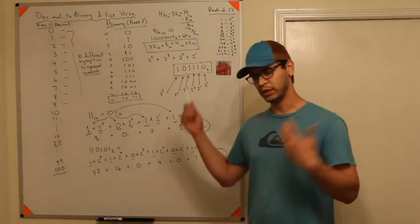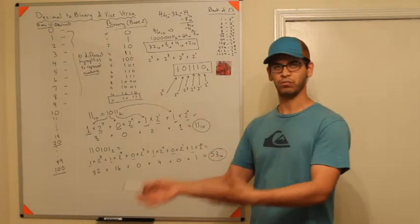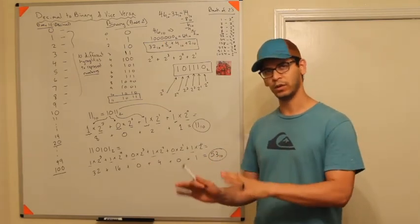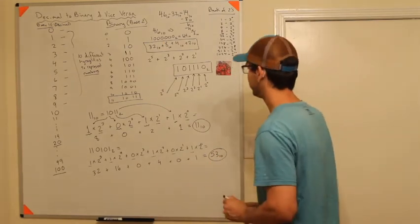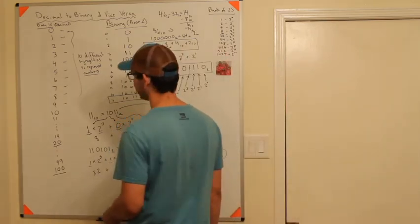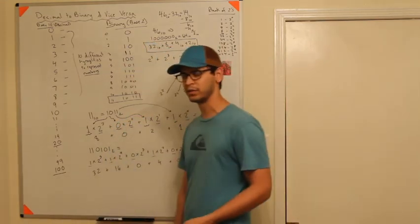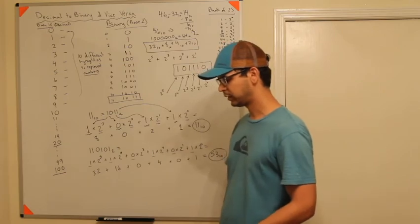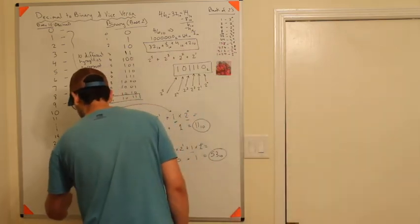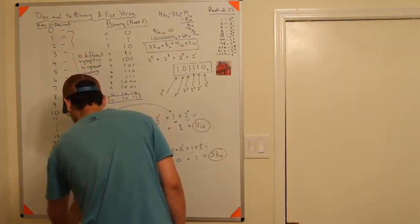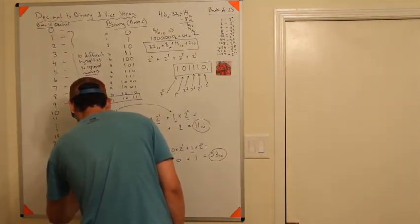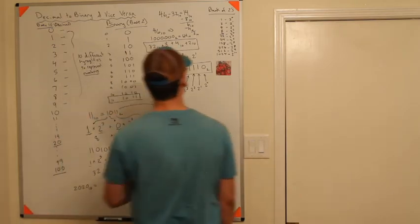If you didn't catch that, just rewind it. But if you want one more example, let's do one more. I already did 46, I don't want to do 42 — that's the meaning of life. Let's do 2020. Why not? That's a big number. 2020 base 10 in binary.